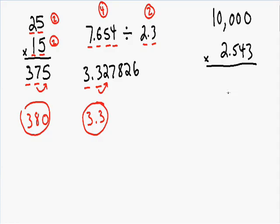Now let's move on to our last example. This is the type of problem that seems to bother the most students, and you'll see why when we get our final answer. Here we have 10,000 multiplied by 2.543, and if we plug this into our calculator we would get an answer of 25,430. But our homework tells us that we need to round using significant figures. Let's take a look at the numbers we just multiplied. We have 10,000, which has one significant figure. All of the zeros are trailing and since there's no decimal point, trailing zeros are not significant if there's no decimal point.